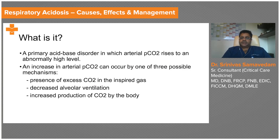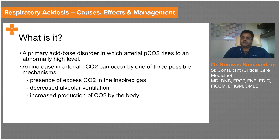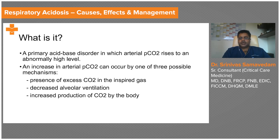Respiratory acidosis is a primary acid-base disorder in which arterial carbon dioxide rises to an abnormally high level. This can happen because of three mechanisms: the presence of excessive carbon dioxide in the inspired gas, as happens at high altitude or in enclosed rooms during a fire; decreased alveolar ventilation due to neuromuscular failure; or increased production of carbon dioxide, as occurs in low cardiac output states.